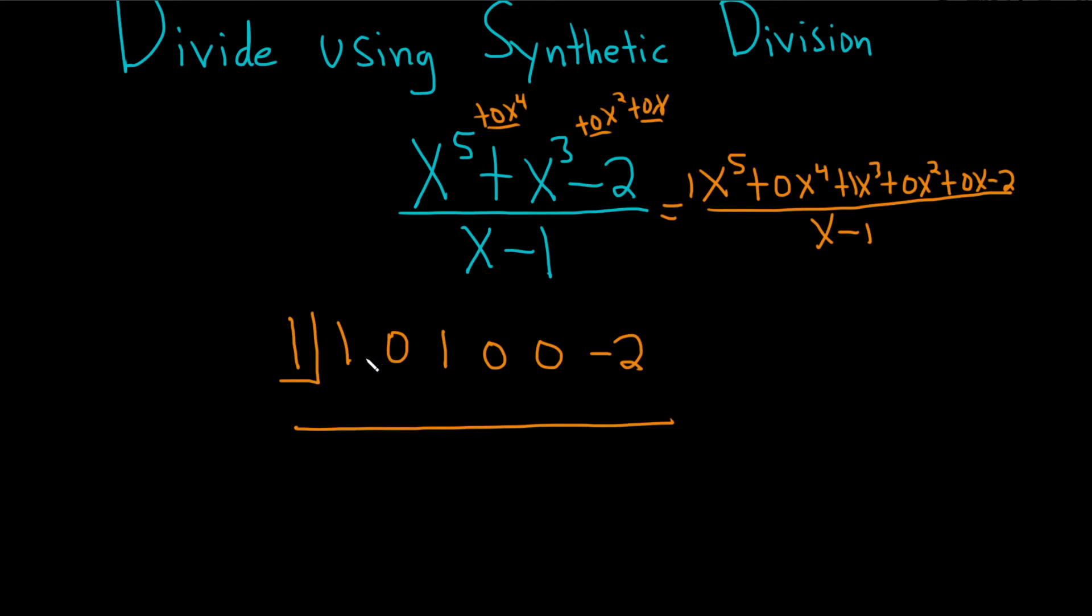Okay, let's go ahead and do the synthetic division now. So the very first step in synthetic division after you do this, when you start the process, is to take this number and just bring it down. So 1, just write it down. Then you start the process.